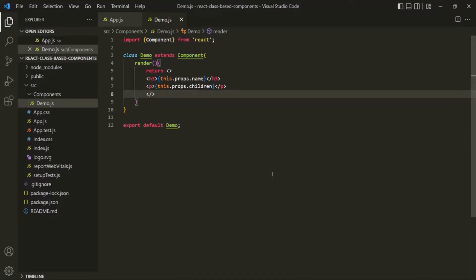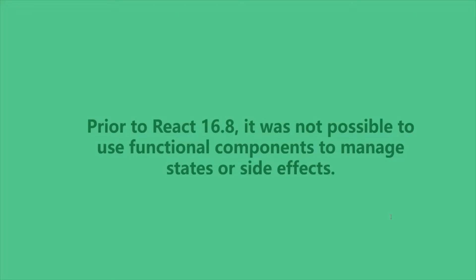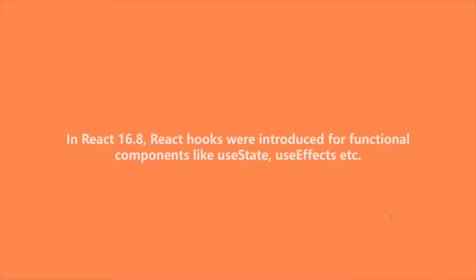In this lecture we learned how to create class-based components. But why do we need them when we can already create components using functions? Class-based components exist because they were required in the past. Prior to React version 16.8, it was not possible to use functional components to manage state or side effects — you had to use class-based components. This changed with React 16.8, which introduced React hooks for functional components, such as useState and useEffect. Using these hooks, we can manage state and side effects in functional components as well — that's why class-based components were needed before.